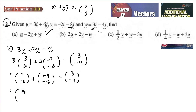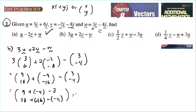Combining x and y components: for x, 9 minus 4 minus 3 gives 2. For y, 18 minus 16 minus negative 4, so 18 minus 16 is 2, plus 4 gives 6. So the result is (2, 6), which we can write as 2i plus 6j.